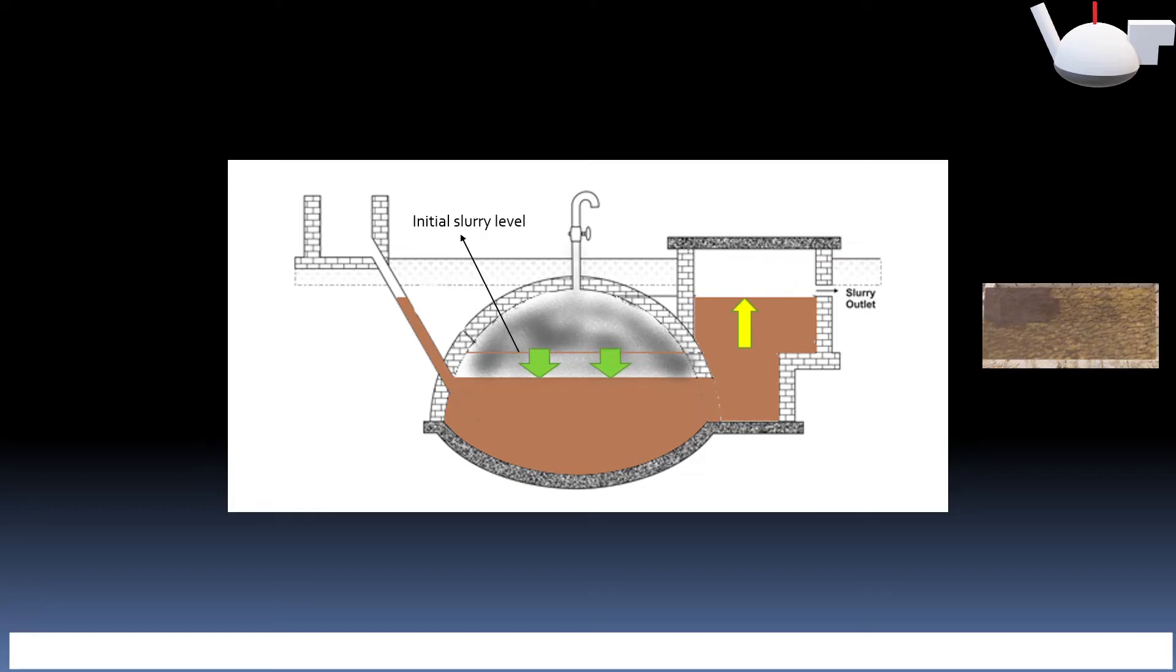If we now add amount of fresh slurry which is required daily in the digester, the similar amount of slurry will go out of the outlet tank. The gas produced after the slurry level in the outlet tank reaches the outlet point will escape through the outlet chamber till the gas is not used. You can see there is a small gap created in the outlet opening by gas pressure.